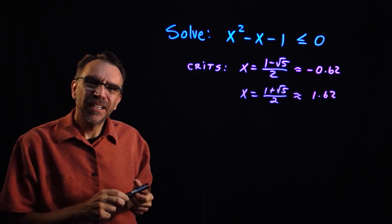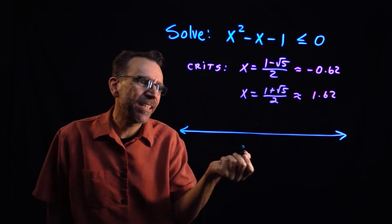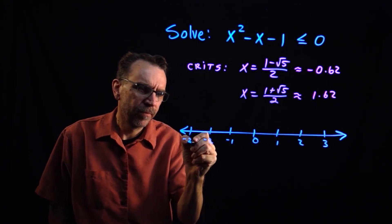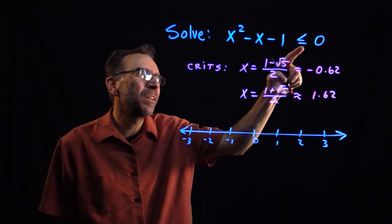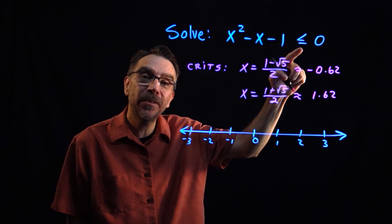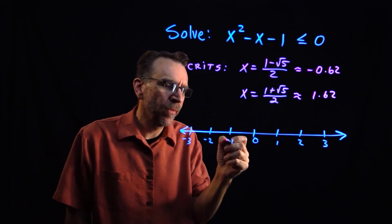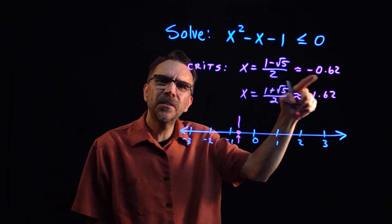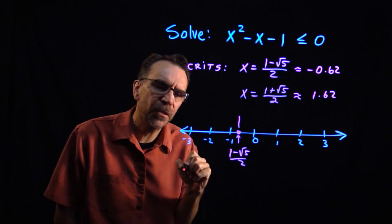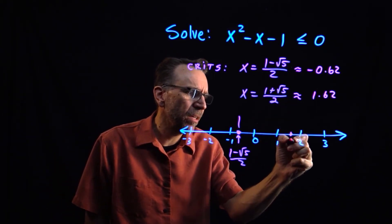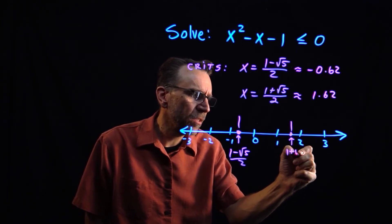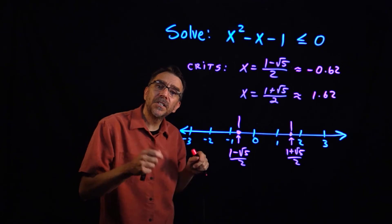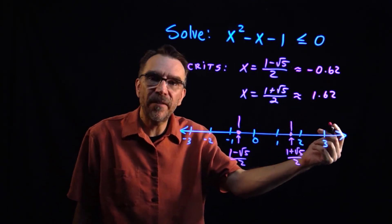The sign chart is just the x-axis — a number line. In this case, I'll use closed dots because the inequality is less than or equal to, which is inclusive, so I'm including the zeros. One closed dot at negative 0.62, labeled with its exact value 1 minus square root of 5 over 2, and another at 1.62, labeled 1 plus square root of 5 over 2. Those two critical values break the number line into three regions, and we test whether the y-values are positive or negative in each.